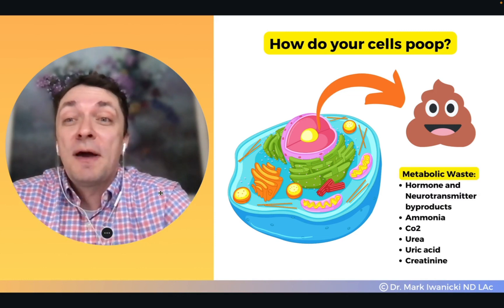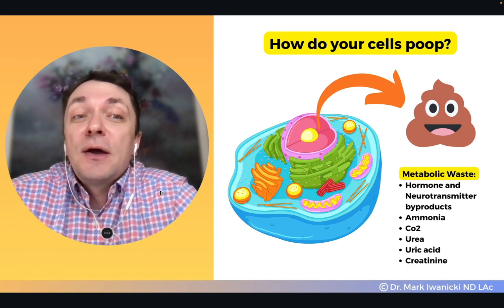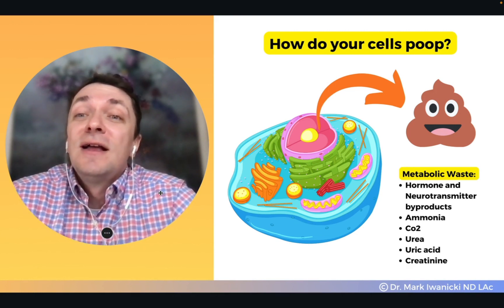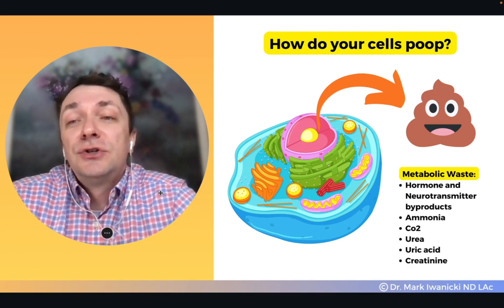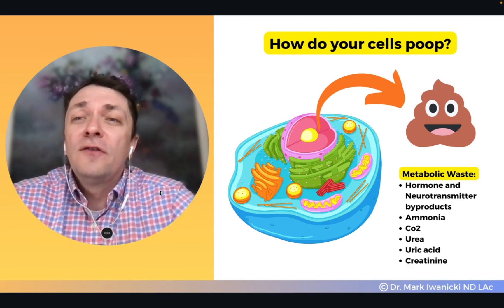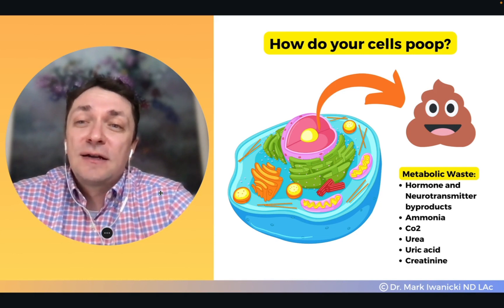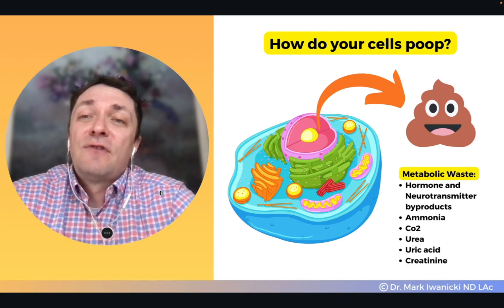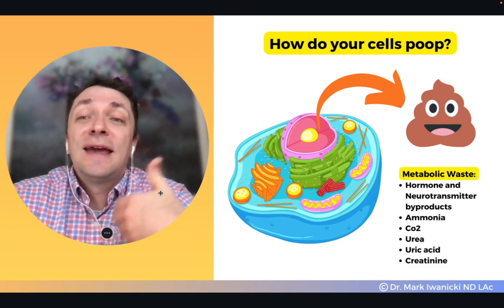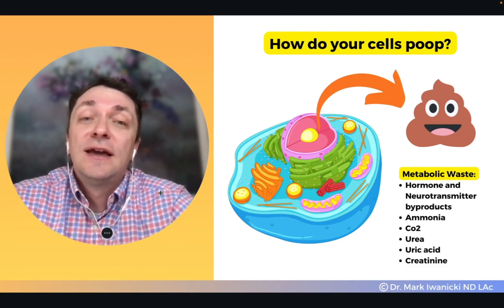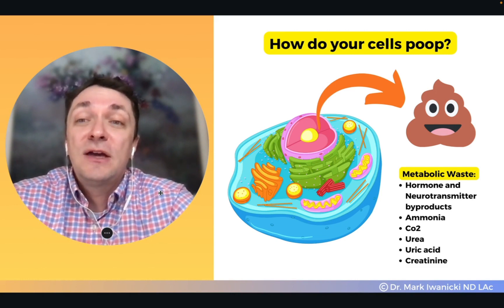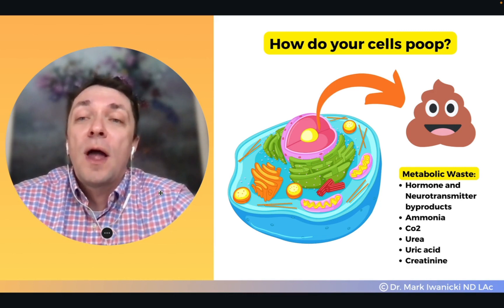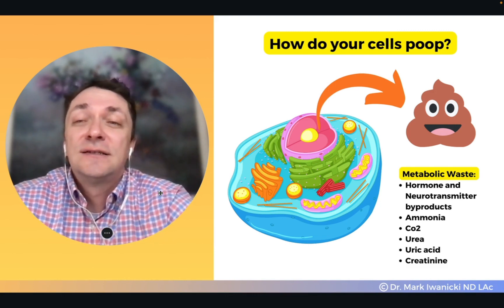When you think about cellular poop or metabolic waste, we're talking about hormone and neurotransmitter byproducts, ammonia, CO2, urea, uric acid, and creatinine. All of these are acidic byproducts produced in the cells' acidic environment. Making sure we're eliminating this properly and getting it out of the body quickly and efficiently is really key to ensuring the cells aren't overwhelmed with too much acidity or toxicity around them.